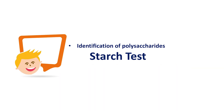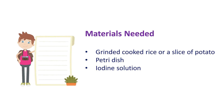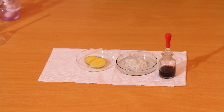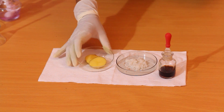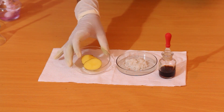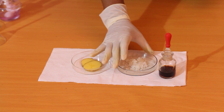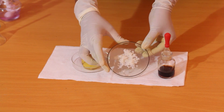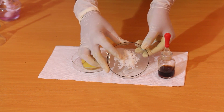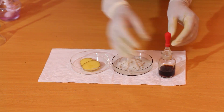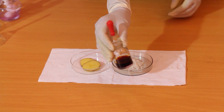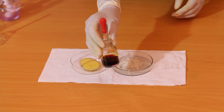Let's identify a polysaccharide. Let's do the starch test to identify the polysaccharide. We need grinded cooked rice or a slice of potato, a petri dish, and the iodine solution. This is the slices of potatoes we are using. Here we have some mashed rice. This is the iodine solution — see that the iodine solution is brown in color.